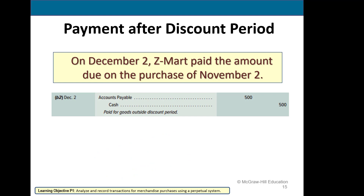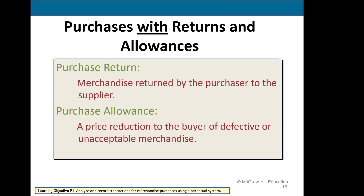If we paid after the discount period, we would simply debit accounts payable and credit cash for $500, and we would not receive that discount. Now let's look at purchases with returns and allowances.